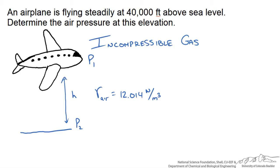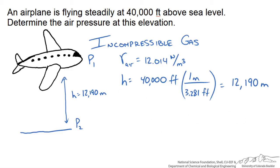So we need to convert our elevation of 40,000 feet to meters, and when we do this we get about 12,190 meters. We also need to know one of the pressures to solve this. We know that our atmospheric pressure at sea level is 101.33 kilopascals.